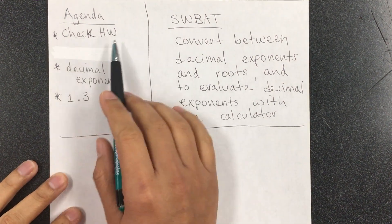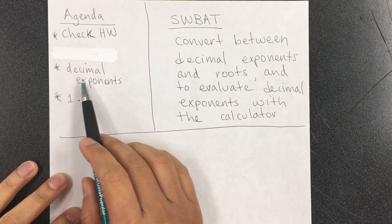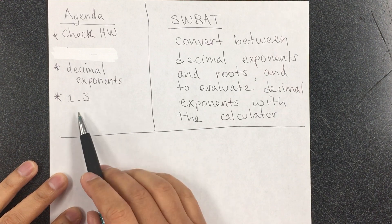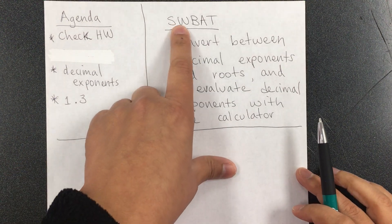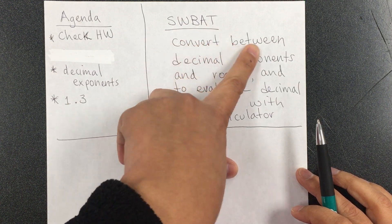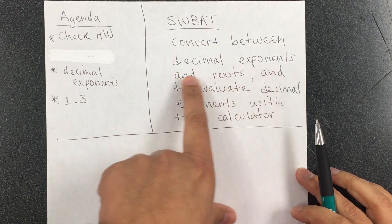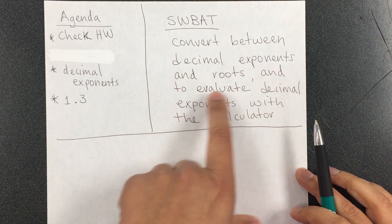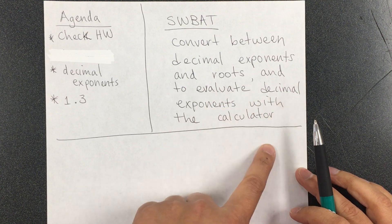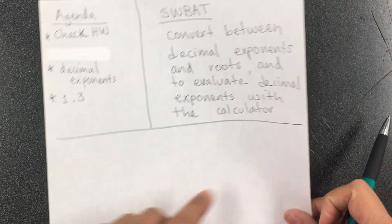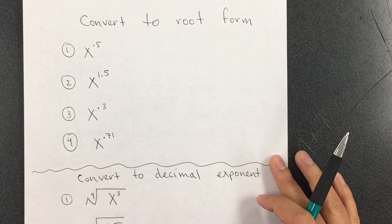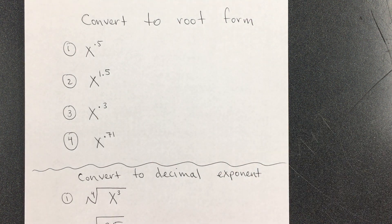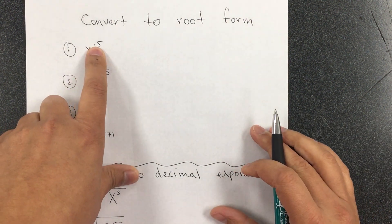Hello students. Today's agenda: subject homework. We'll be learning decimal exponents, and you will be able to work on 1.3. Students will be able to convert between decimal exponents and roots and to evaluate decimal exponents with a calculator. It's a little related to what we saw before, but now it starts with decimals.